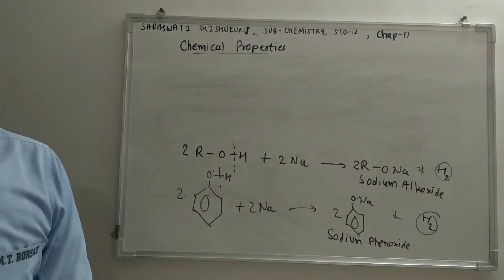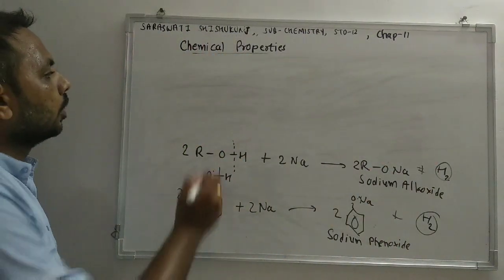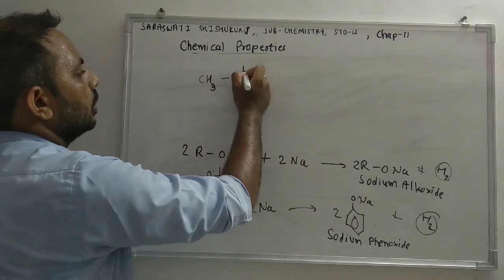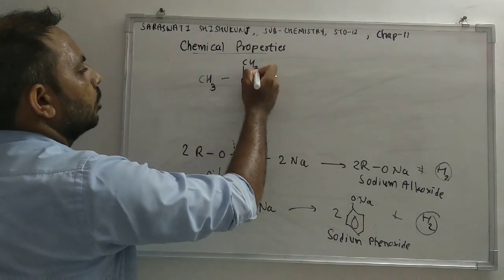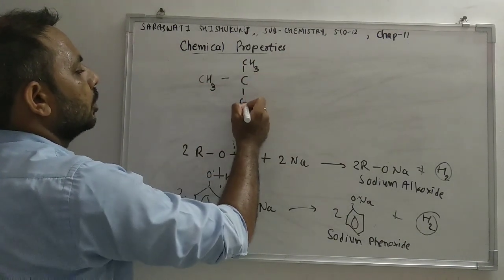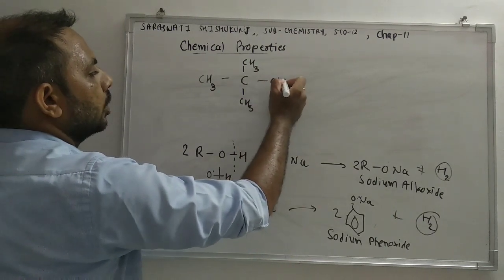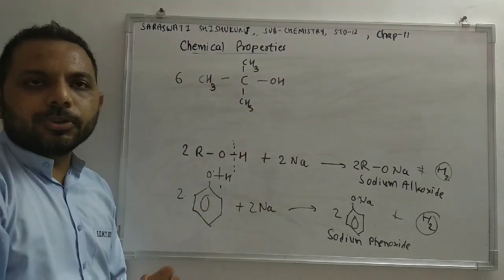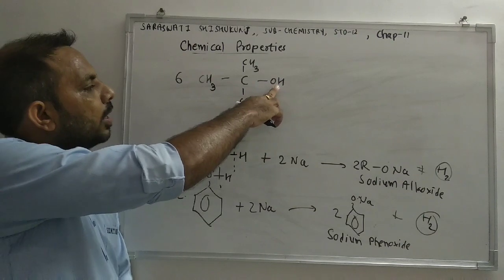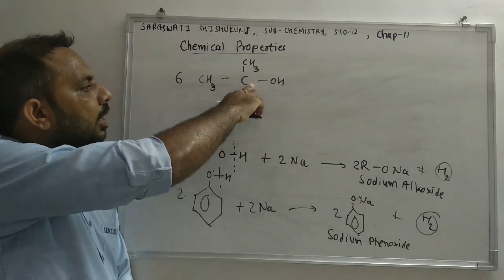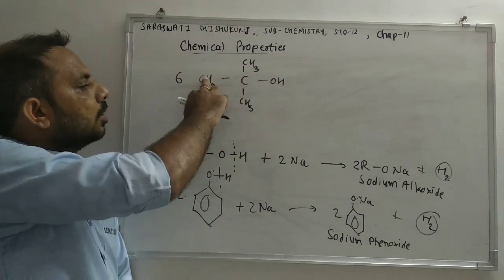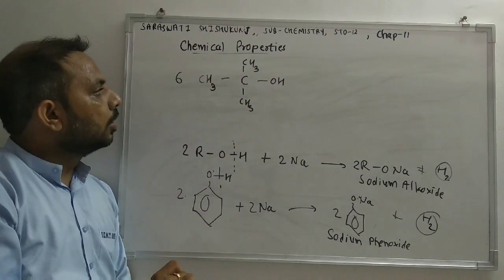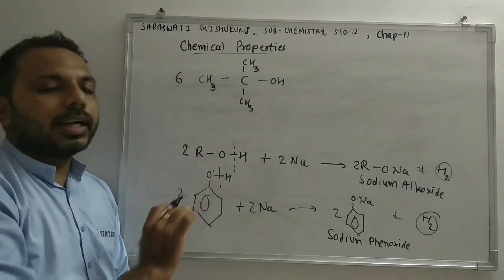Let us understand this with one more example. We have got tertiary alcohol — the carbon attached to the O–H group is attached to three other carbons, so this is a tertiary alcohol.